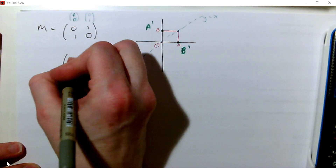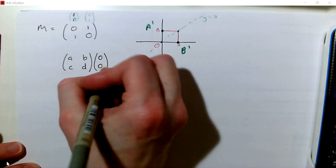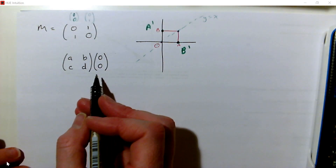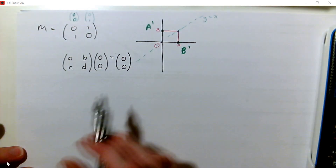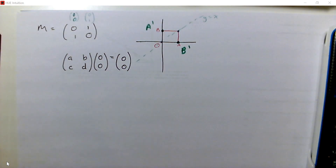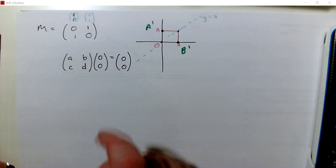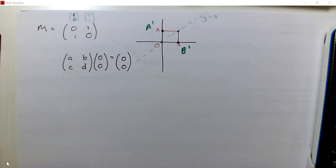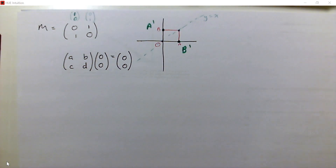Because if we've got any transformation matrix and we multiply it by the position vector 0, 0, we will always get out 0, 0 again. So it doesn't matter what linear transformation we've got, 0, 0 is always an invariant point. For some matrix transformations we will also have other invariant points, and it turns out they will always lie on a line going through the origin.